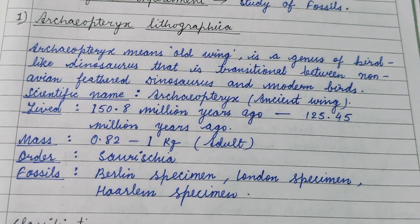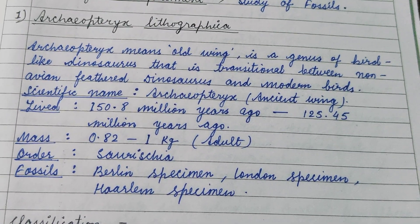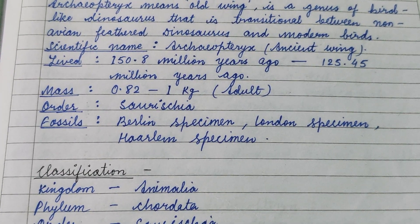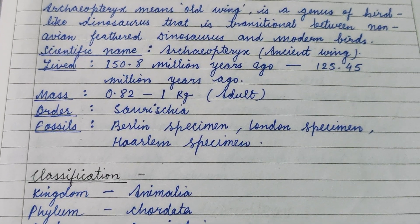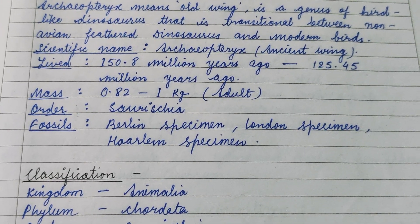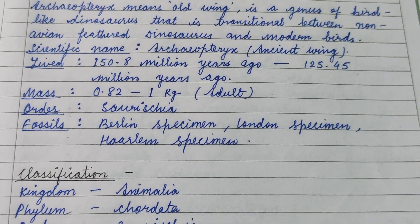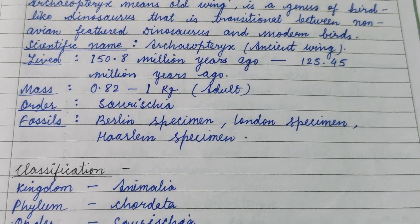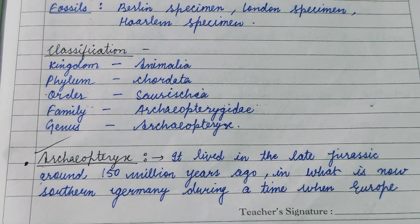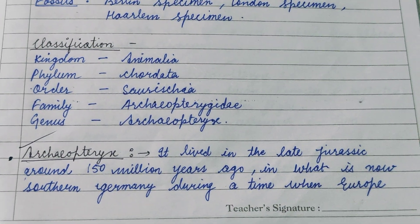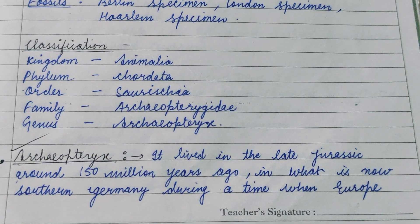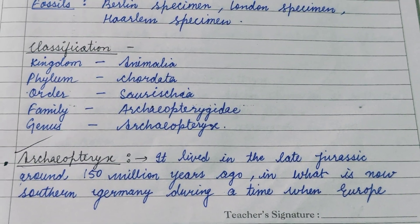Archaeopteryx lived approximately 150.8 million years ago. Its mass was between 0.82 and 1 kg. The order is Saurischia. Famous fossil specimens include the Berlin specimen, London specimen, and the Harlan specimen. It lived in the late Jurassic, around 150 million years ago.